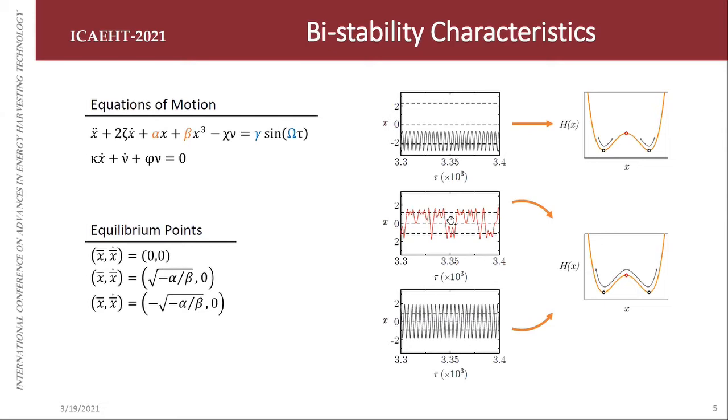So alpha needs to be negative for the system to present bistable characteristics. Knowing that, here are the three possible equilibrium points for a bistable system, where at rest you have unstable points. And in this position here, depending on alpha and beta, you have stable equilibrium points. You can see here in this example of potential energy function, the black dots are the stable equilibrium points and the red dot is the unstable one.